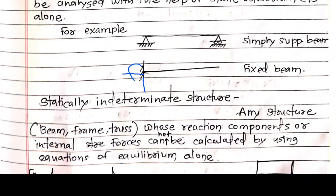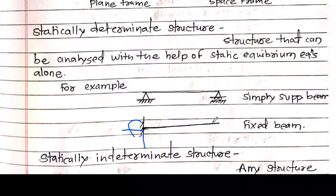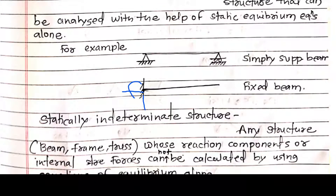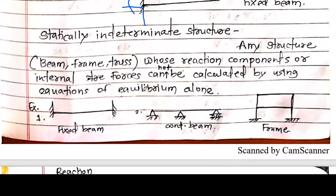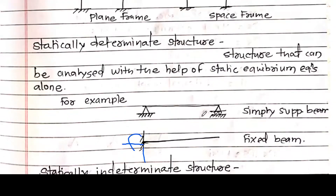From these examples you can differentiate what is meant by determinate and what is meant by indeterminate. If any structure's reaction components or internal forces cannot be calculated using equations of equilibrium, then it is indeterminate. These two structures — the simply supported beam and cantilever beam — are determinate.